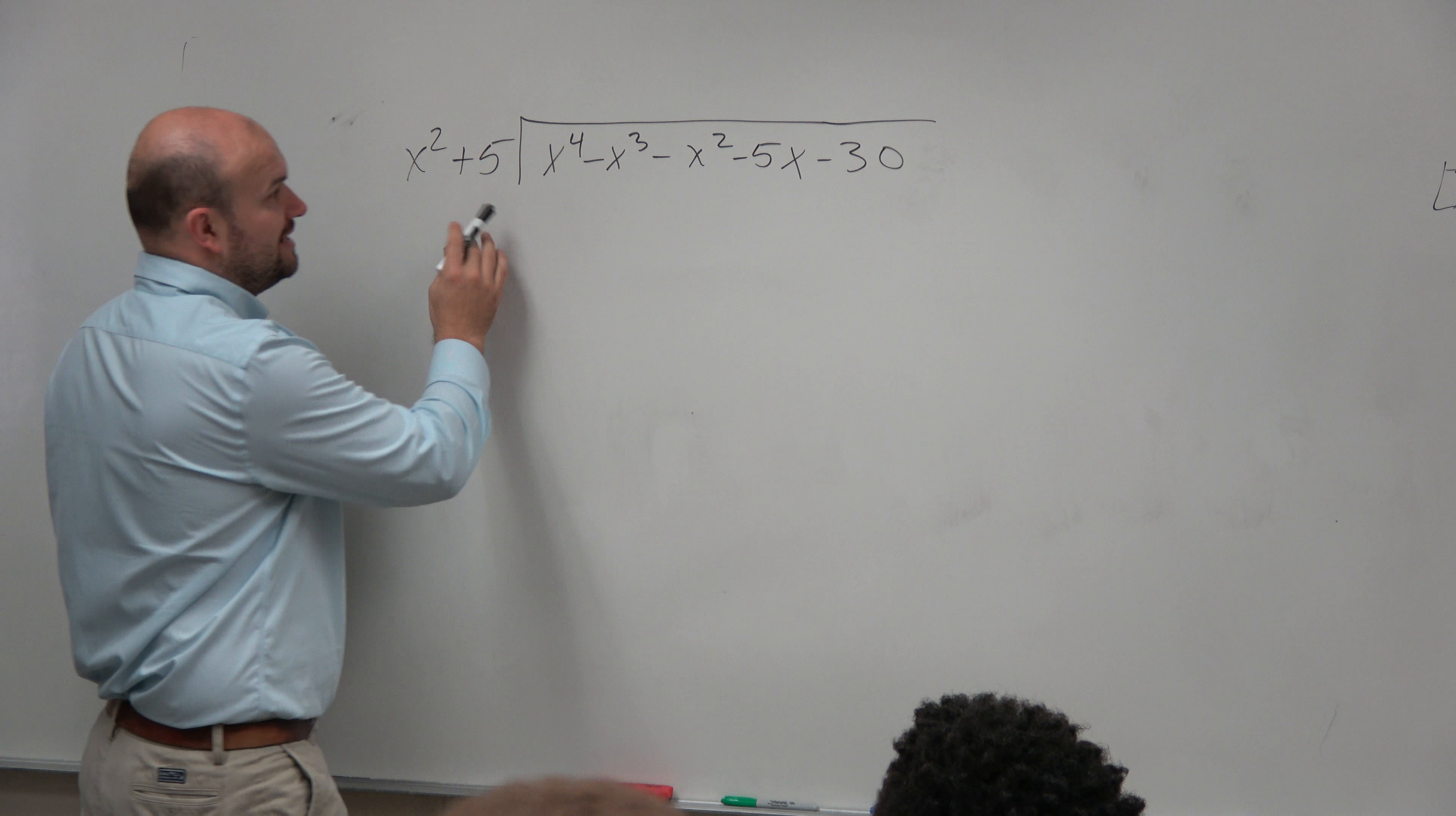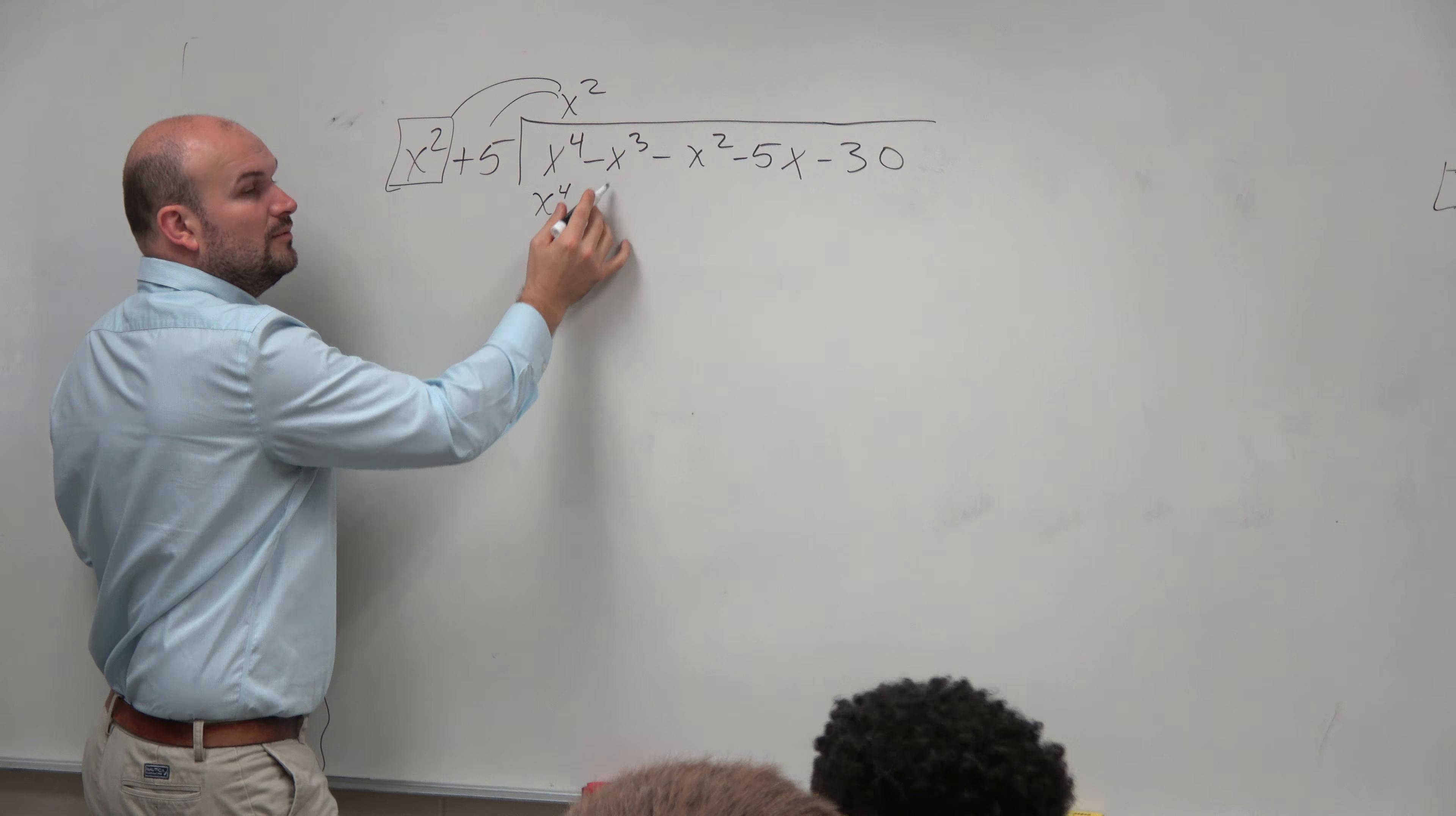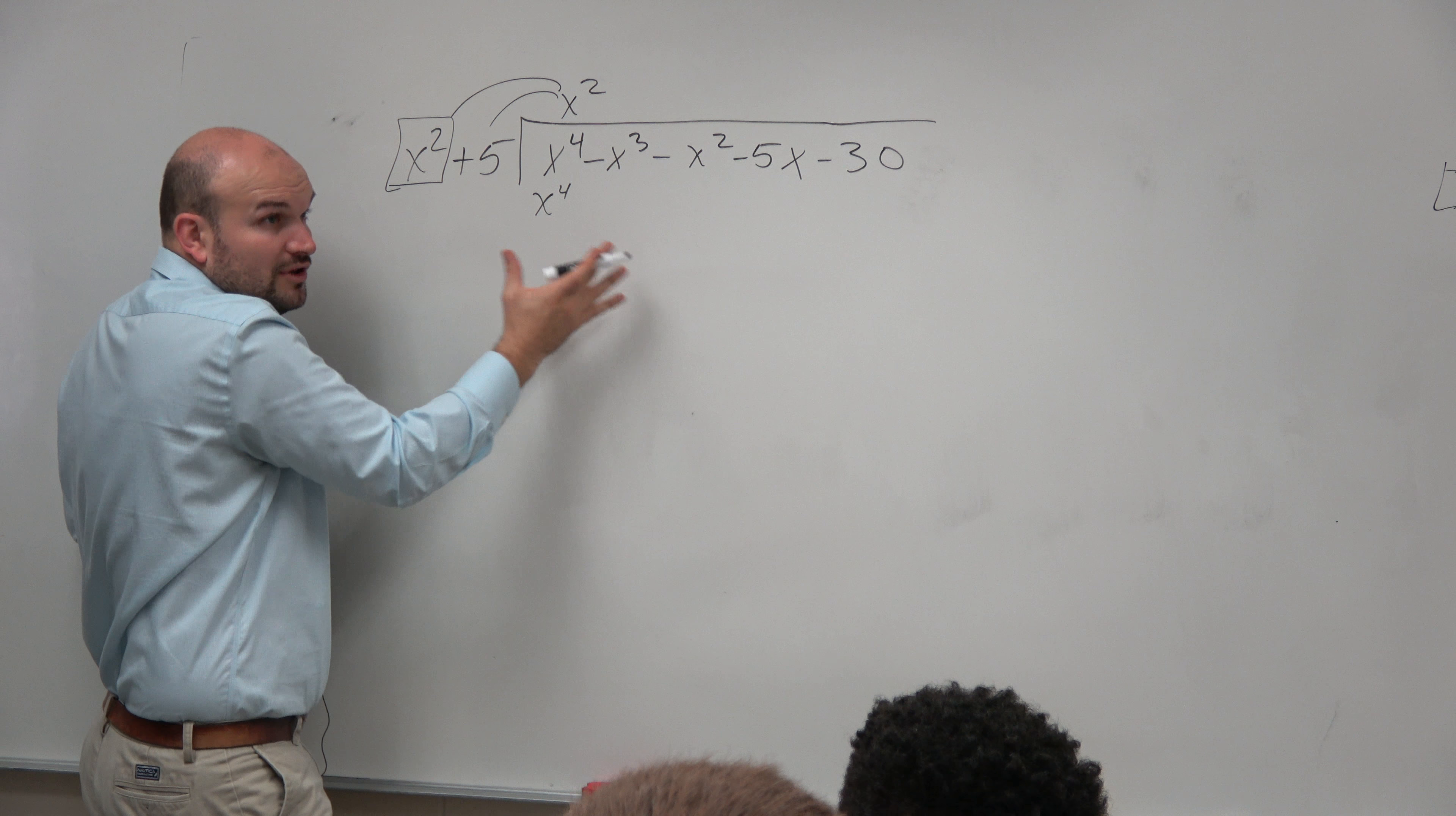So we say x squared goes into x to the fourth, x squared times. Then we just got to make sure whatever we put as our quotient, we got to multiply it by both those terms. So x squared times x squared is x to the fourth. x squared times 5 is 5x squared. Now, you can only add and subtract like terms. So therefore, I need to put 5x squared under the x squared kind of column, right?